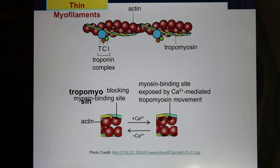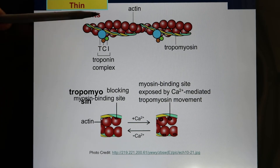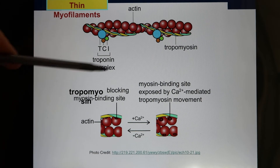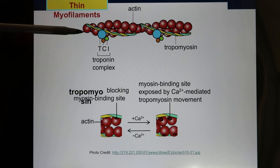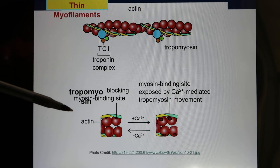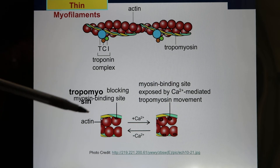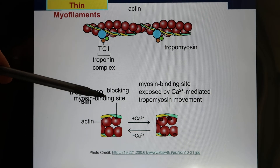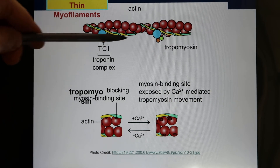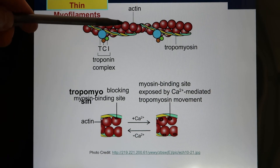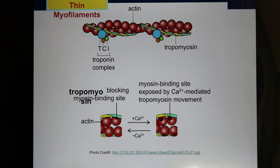If you want strong muscle contraction, you need tropomyosin to move away. Then actin and myosin, like two strong magnets, will glue together. You need a sensor to pick up the signal, and that sensor is troponin. The signal is calcium. In the SR, you have a lot of calcium. When muscle contraction happens, calcium is released from the SR, calcium binds with troponin, troponin moves tropomyosin away, and when tropomyosin moves away, actin and myosin bind strongly — that's muscle contraction.